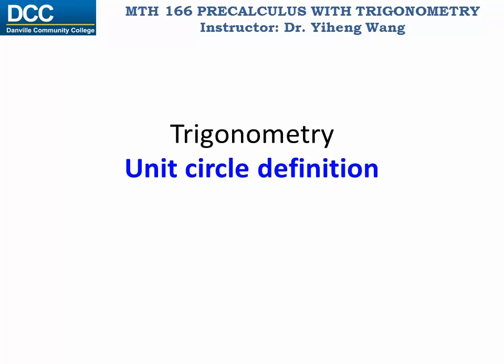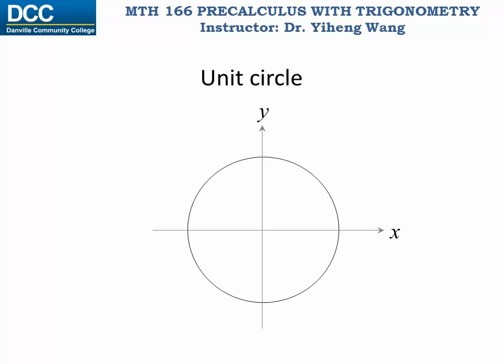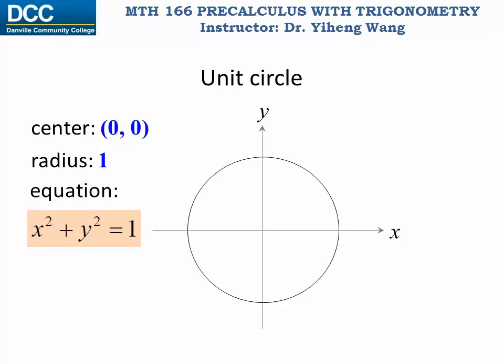In this video we're going to introduce the unit circle definition for trigonometry. A unit circle is a circle drawn in our x-y coordinate system. It is centered at the origin, and most importantly it has a radius of one — that is why it is called a unit circle. This circle has the equation x squared plus y squared equals one.